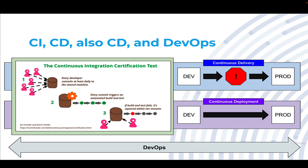Beyond that, we have Continuous Delivery, which takes that same level of automation and applies it to the deployment process. Instead of waiting on a series of human beings to follow instructions for delivering stuff, you're going to have automation that runs as part of your process to handle the delivery for you. There will be a manual step, or at least a point of human intervention where someone has to say yes, this is good to go to production — generally known as a CAB, a change advisory board — some sort of manual approval.